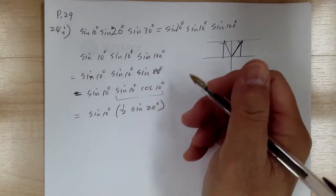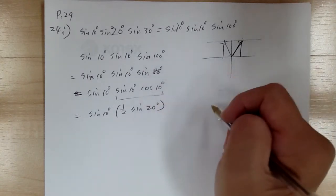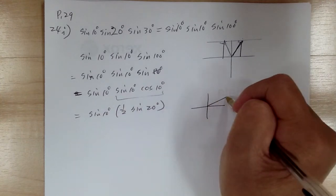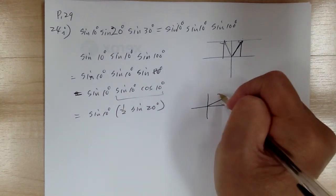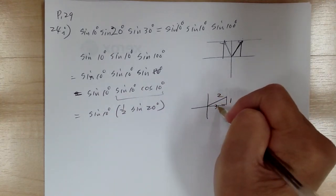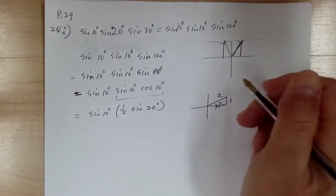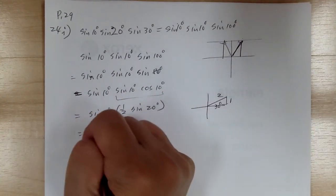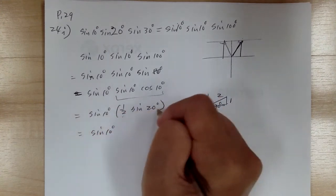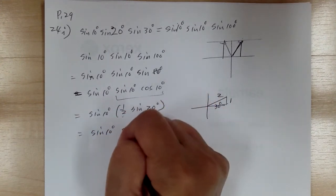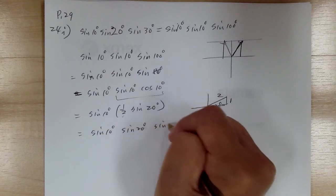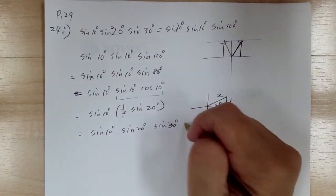So we have one-half times sine 20°, and since one-half equals sine of 30°, this becomes sine 10° times sine 20° times sine 30°. This equals the left side, so it checks out.